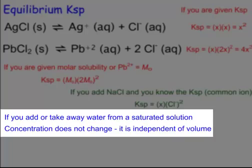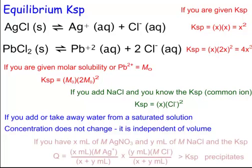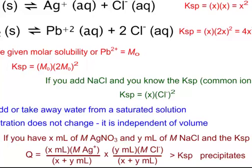If you add a common ion like the chloride ion and that concentration goes up, the lead or silver will go down to compensate. But if you add or take away water, nothing changes. Watch out for Q problems — if they give you concentrations and you've solved for K already, find the individual concentrations using M₁V₁ = M₂V₂, because you're basically diluting. Take your milliliters, multiply by molarity, divide by total. If Q is greater than K, you're going to precipitate; if it's less, you won't precipitate.